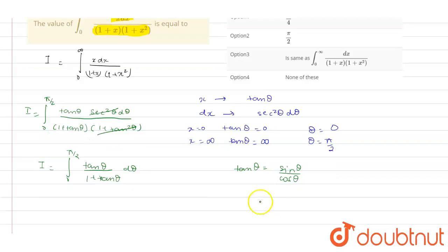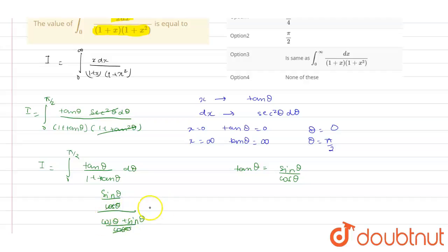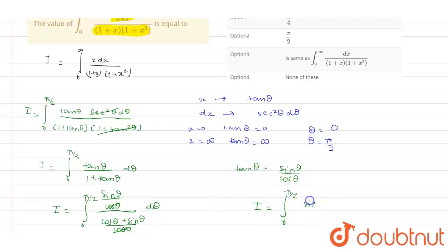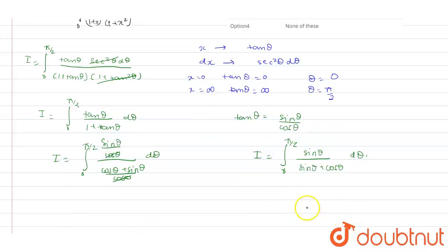Now we know tan θ equals sine θ upon cos θ. Substituting this value, we get sine θ over cos θ divided by (cos θ plus sine θ) over cos θ. The cos θ cancels out, giving us I equals integration from 0 to π/2 of sin θ upon (sin θ plus cos θ) dθ. This is our integral.